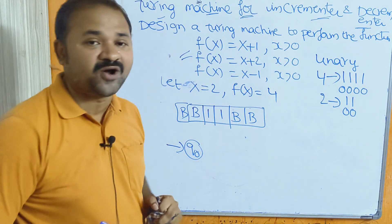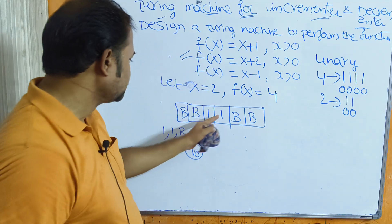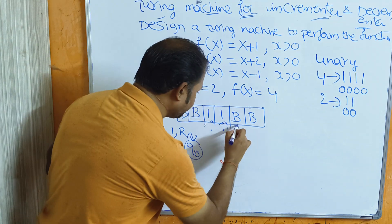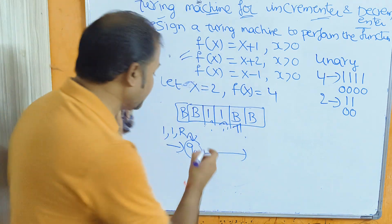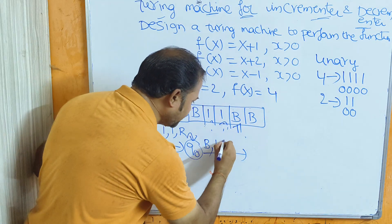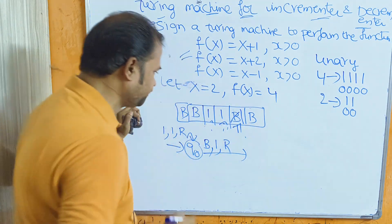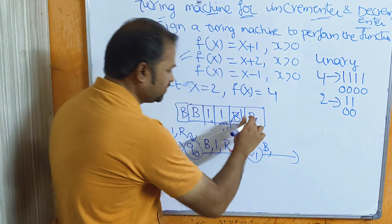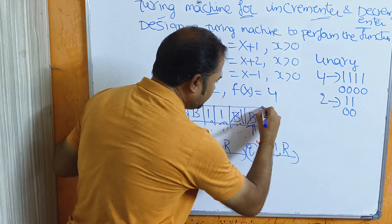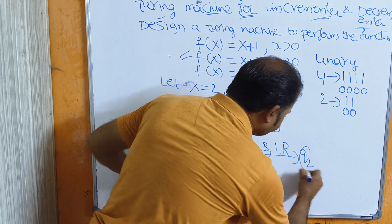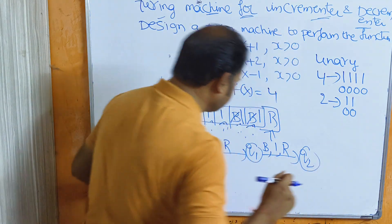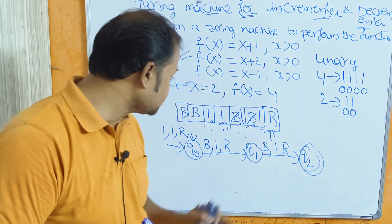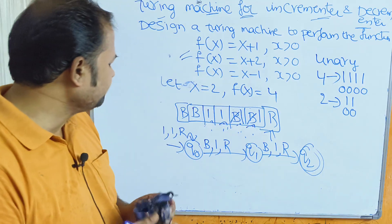On Q0, if you read any number of 1s, keep them the same and move the head towards the right. When you read a blank symbol on Q0, replace the blank symbol by 1 and move the head towards the right. Then we are at Q1 state; if you read a blank symbol on Q1, replace it by 1 and move the head towards the right. Now we are at Q2, which is the final state. Initially the input is two 1s; the output is four 1s, which is nothing but 4.